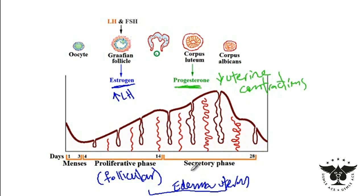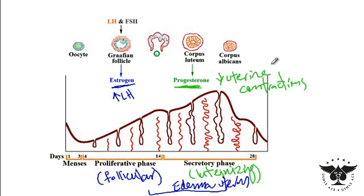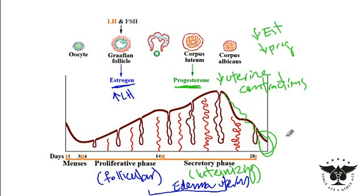The other name for the secretory phase is the luteal phase. The corpus luteum has a limited lifespan, and in the absence of human chorionic gonadotropin it will degenerate. Once it degenerates, due to decreased estrogen and decreased progesterone, the endometrial wall starts to shed and fall apart — and that is when menses occur.